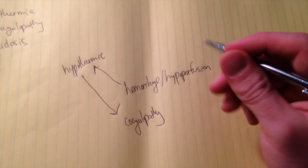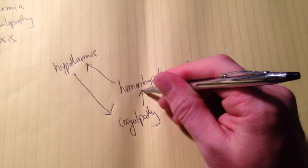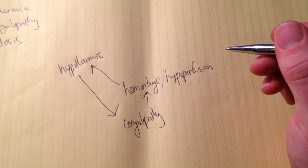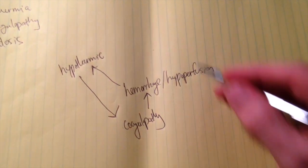Likewise, if there's a coagulopathy, if the clotting system is not working properly, that's going to lead to more hemorrhage and thus more hypoperfusion. That's kind of one arm of it.